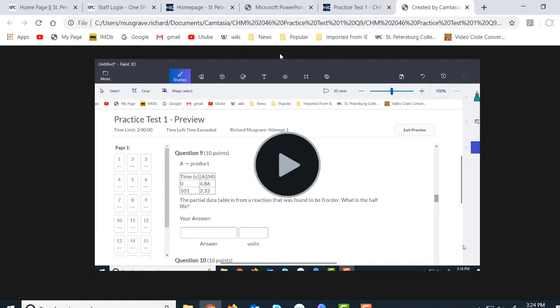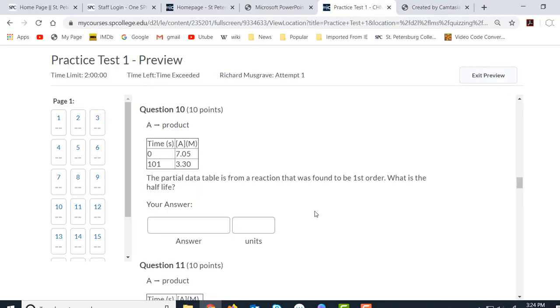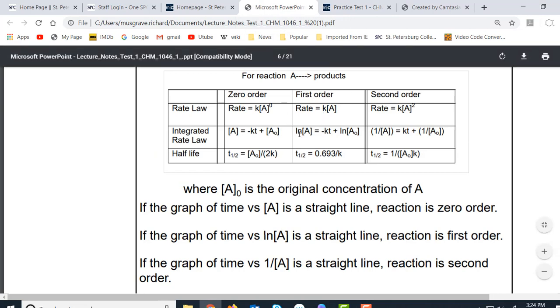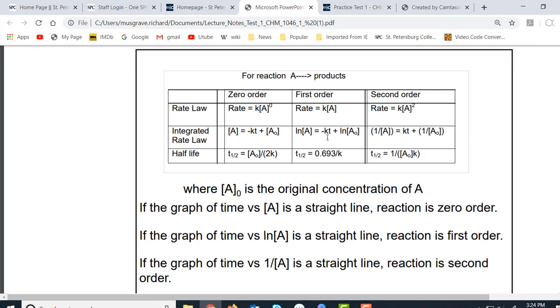We go over here to the table and the table tells us that for first order it's going to be log of A, that's going to be the y value. We're still looking for the slope and the slope is going to be negative k, which means k is equal to the negative slope. We're going to have to find the slope using log values here in order to get the k value, and here is the formula for the half-life as well.